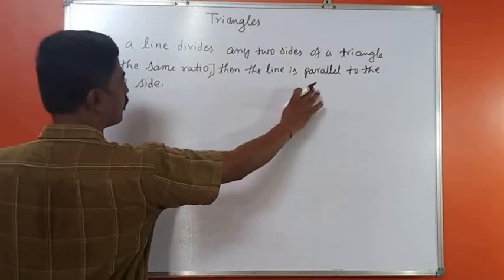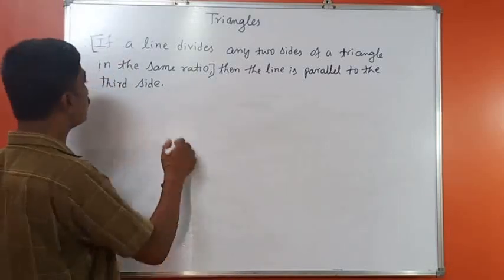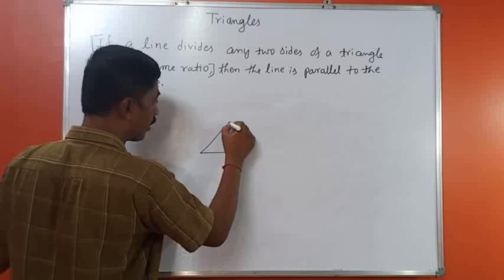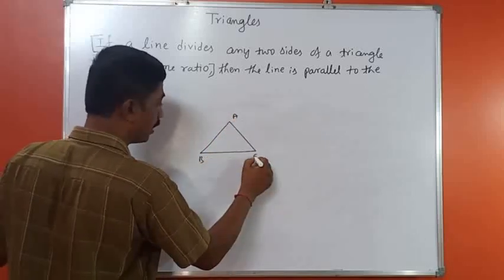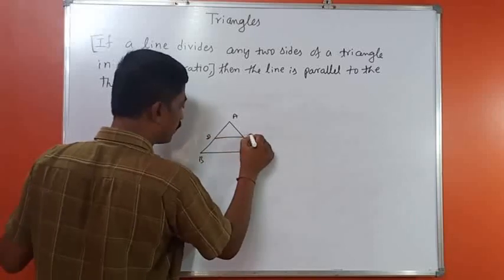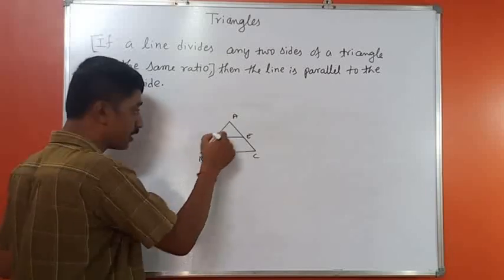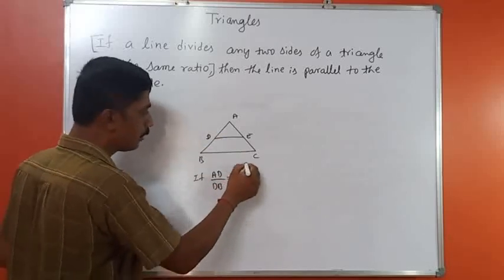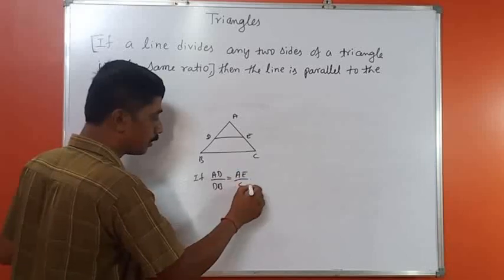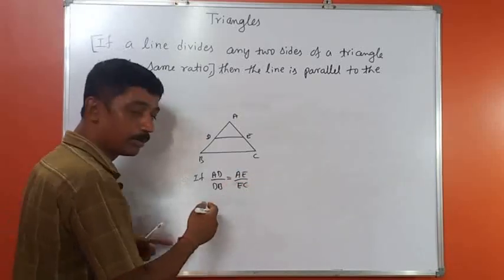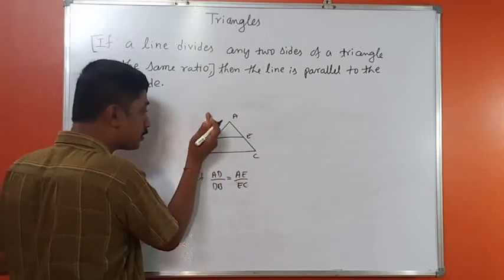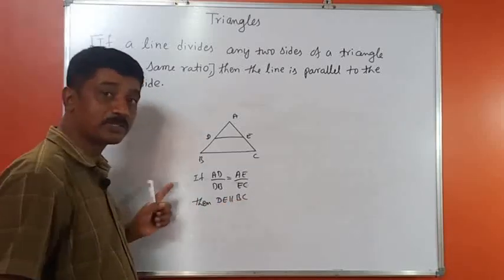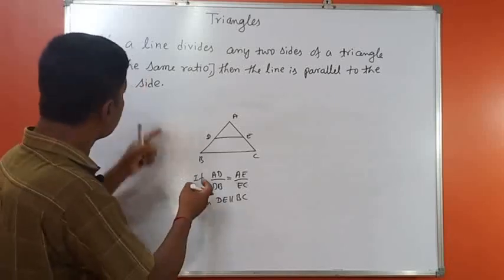From the given condition, you need to prove the conclusion. If a line divides any two sides of a triangle in the same ratio — for example, in triangle ABC, if line DE divides the two sides such that AD/DB = AE/EC — then we need to prove that DE is parallel to BC. This is the Converse of BPT.